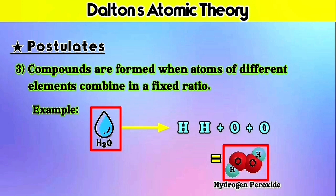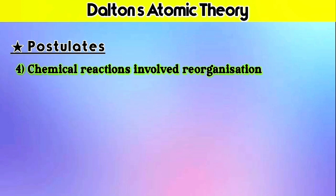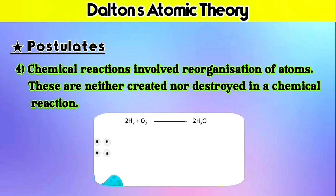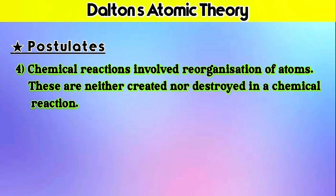The fourth and last postulate is: chemical reactions involve reorganization of atoms — these are neither created nor destroyed in a chemical reaction. It simply means that when any chemical reaction takes place, the existing atoms are only reorganized to create a new compound. Although the product is called a new compound, during the reaction nothing new is created or destroyed — they are only reorganizing together. This postulate is very similar to the law of conservation of mass, which you have already read in this chapter.